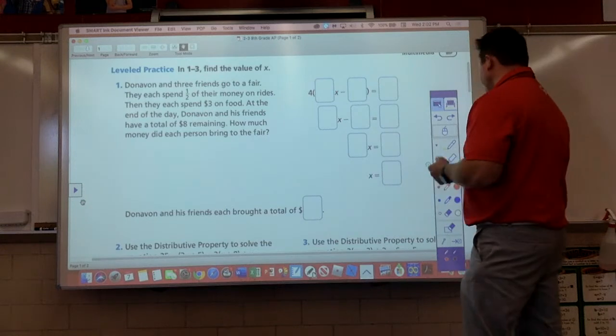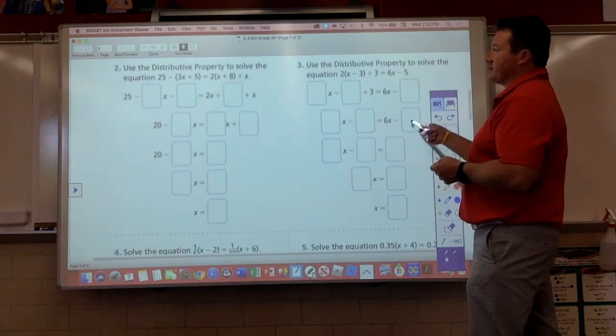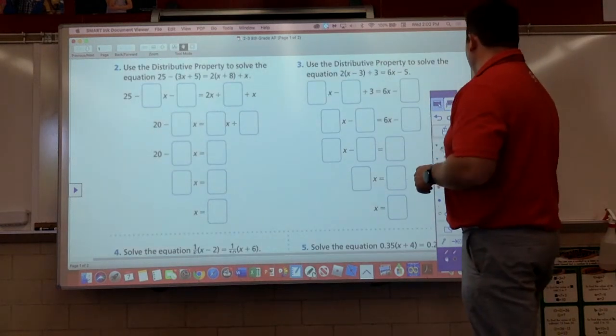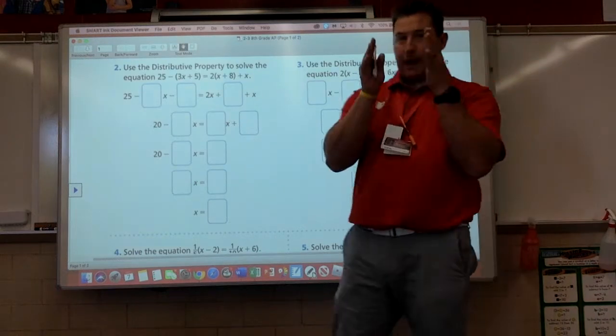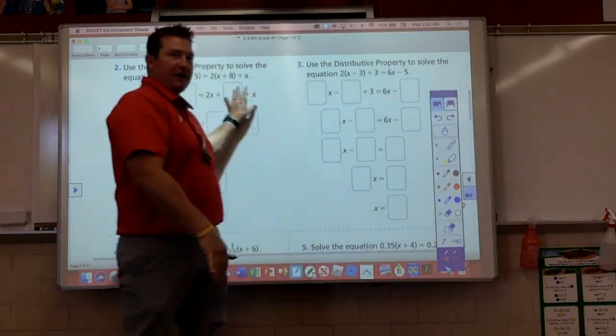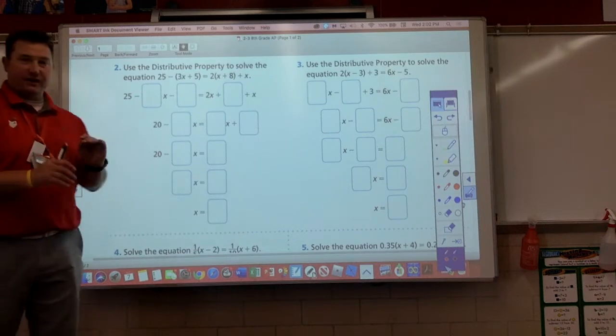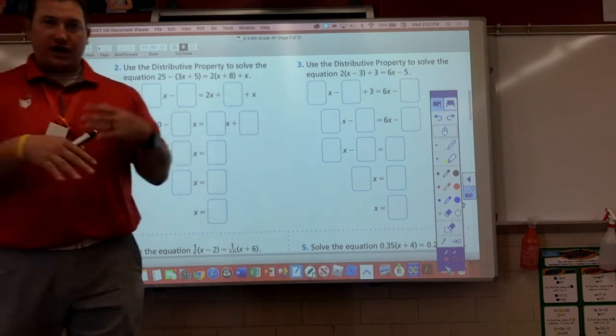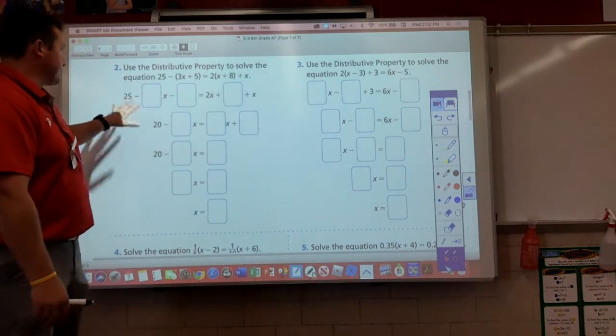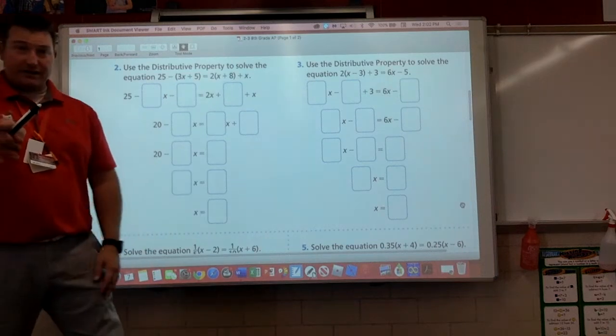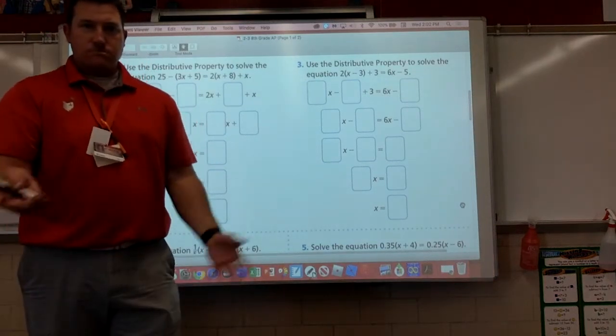I think this equation's easier than we had variables on both sides. I only have it on one side. Two X, stay put. We know this 12 is moving across here. Opposite operation. We're adding 12. It should be 20. Now we're dividing by our coefficient. Divide by two. Divide by two. There's how much money each one of them brought. $10. So Donovan and his friends each brought a total of $10. In total, they had $40 altogether, but each of their friends brought $10. Good to go? Pretty straightforward. That's right. It's good. Good.